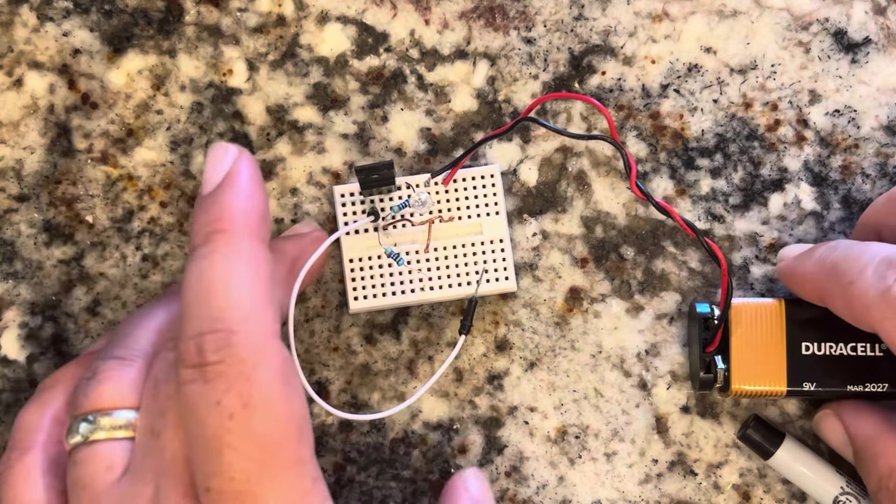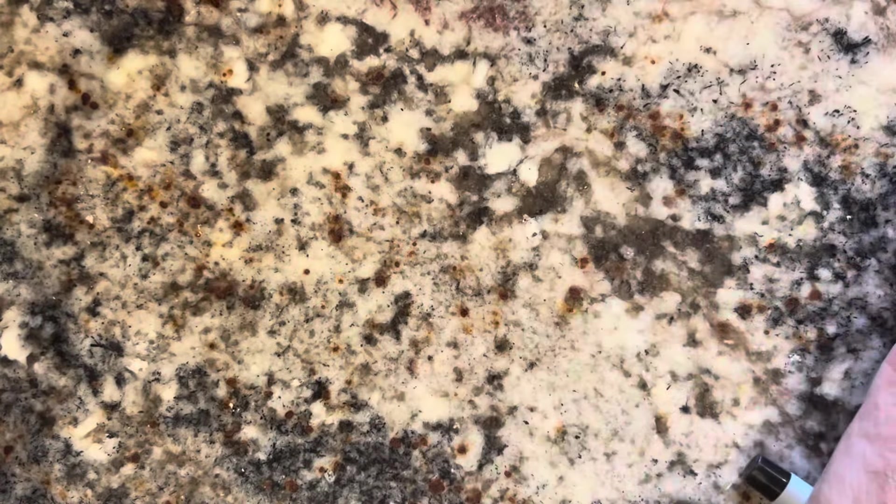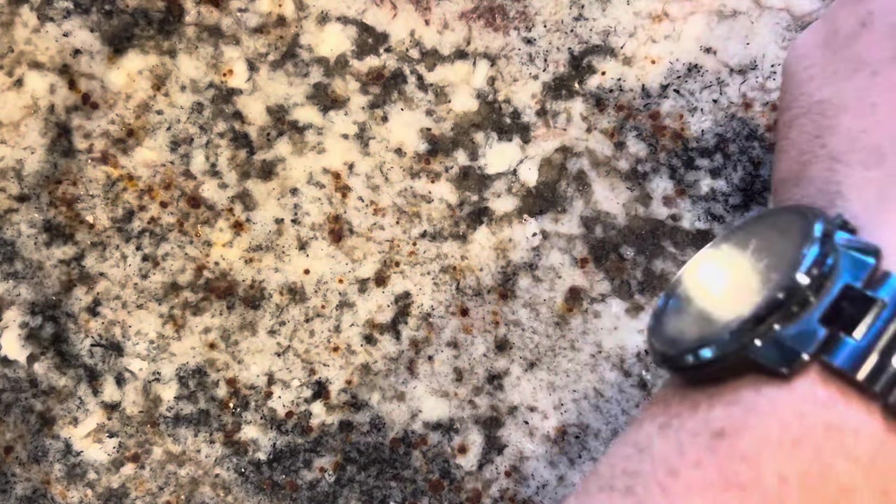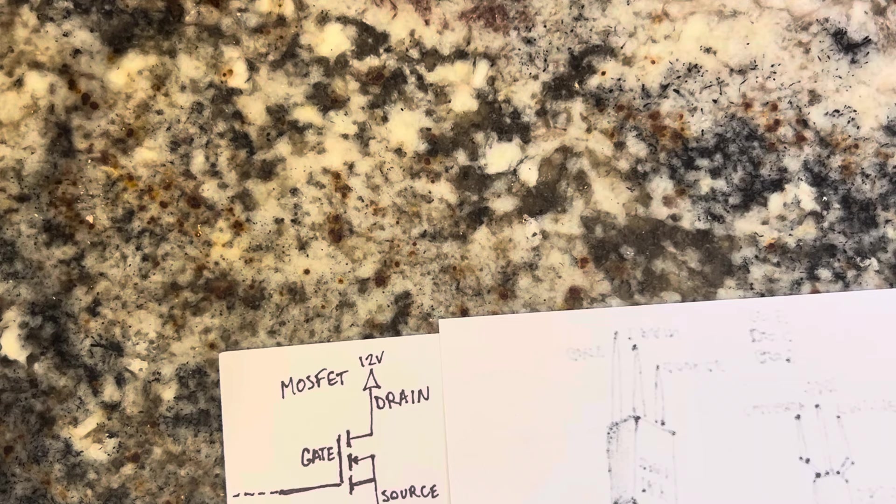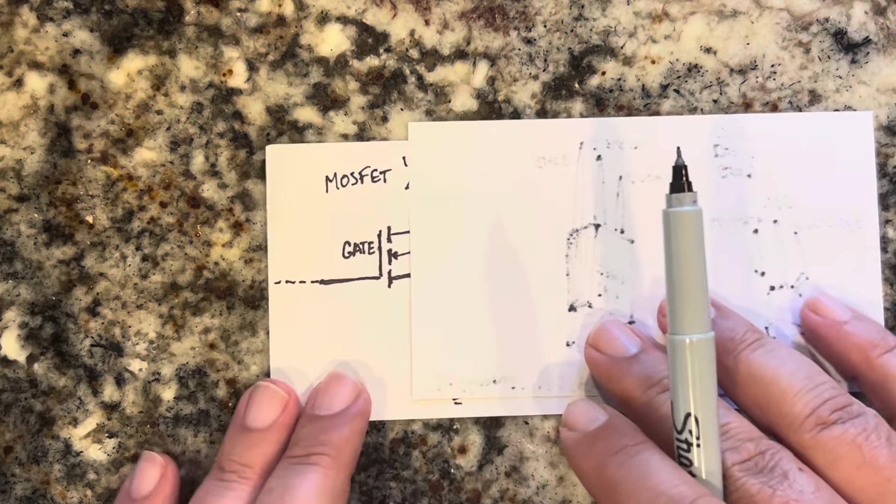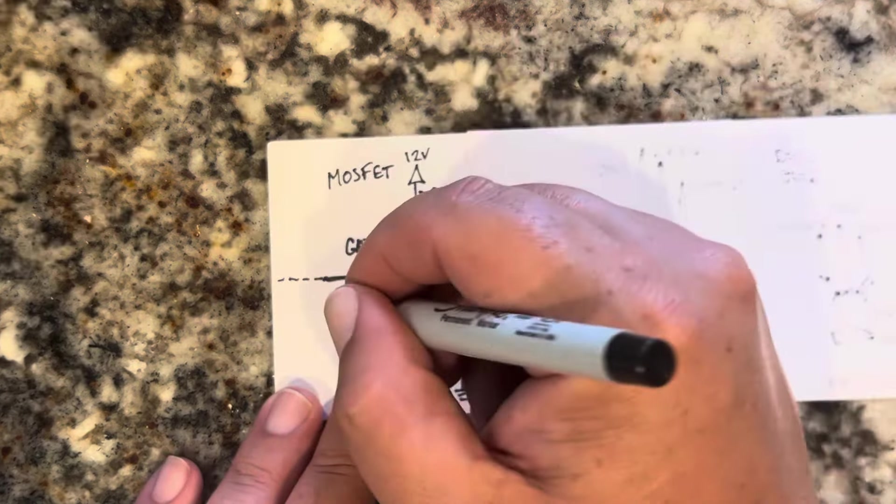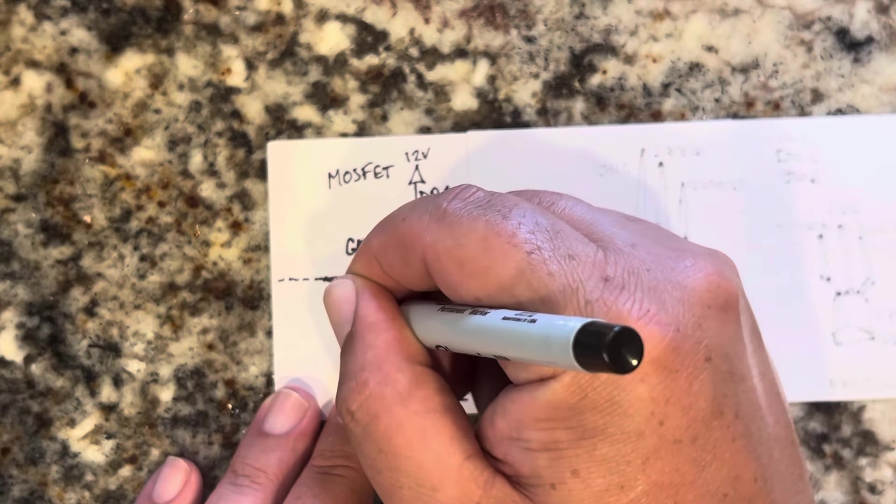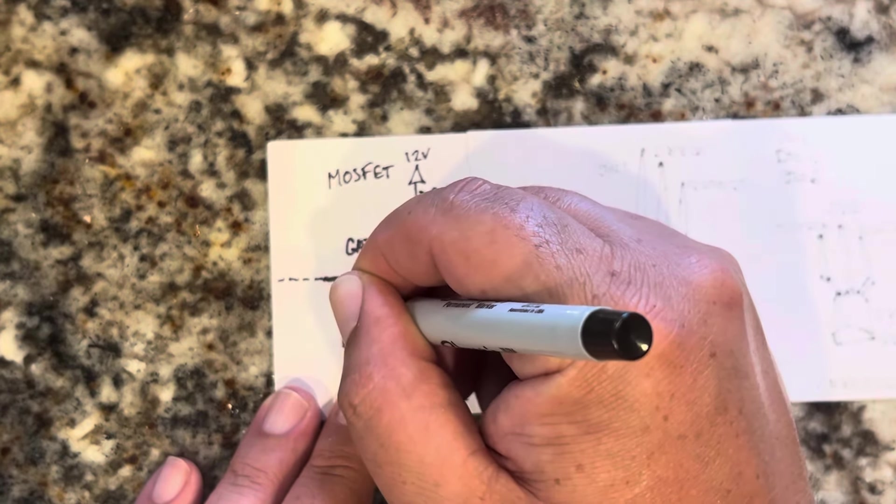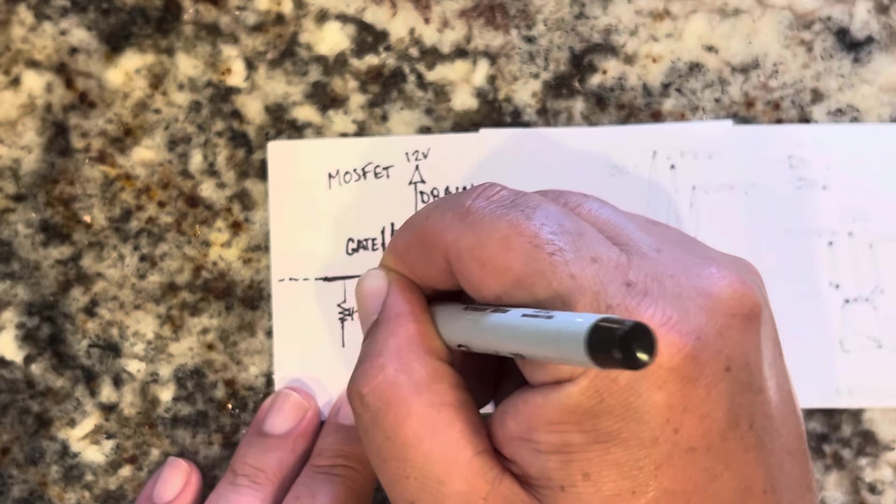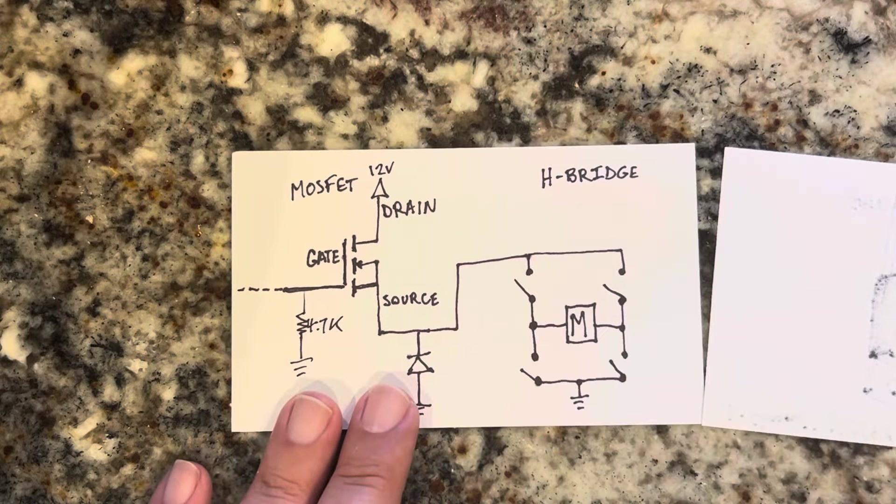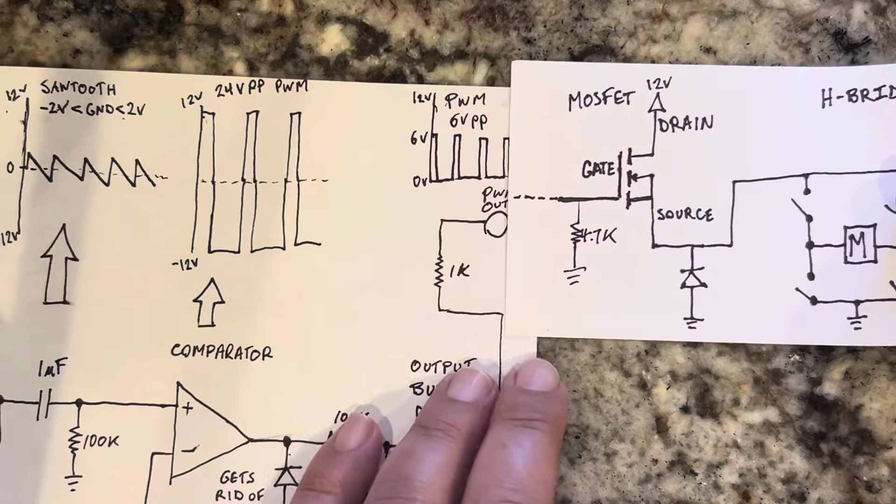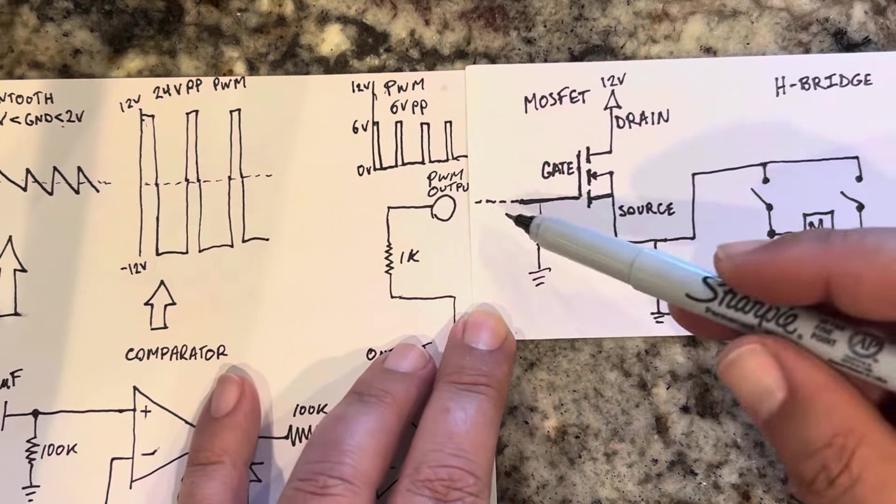When I make this circuit happen here with the MOSFET, I have here the MOSFET, and I need a pull-down resistor. It could be anything, 4.7K to ground. And then what you do is, when you take this PWM signal, the PWM output, you connect it there to the gate of the MOSFET.